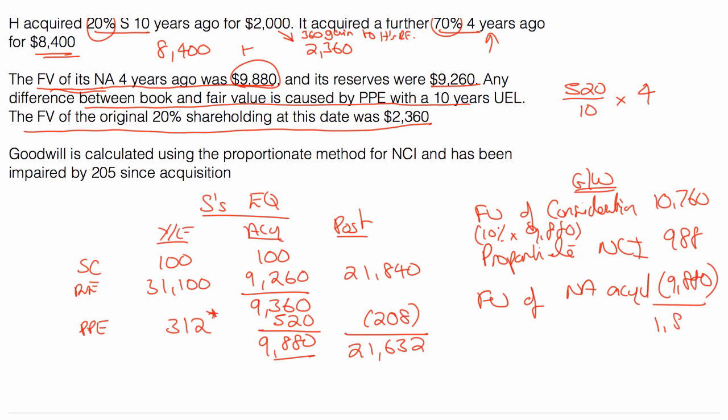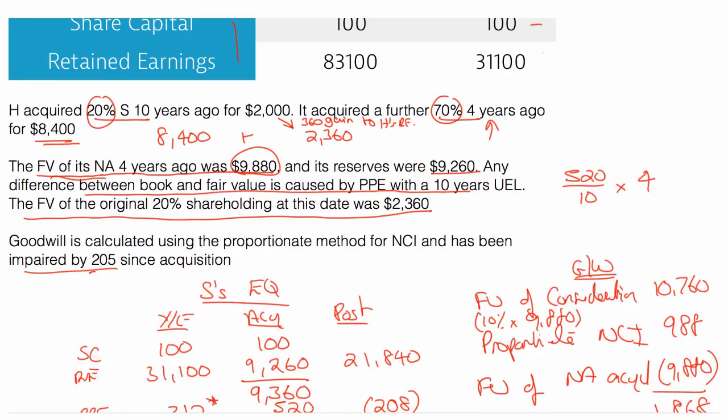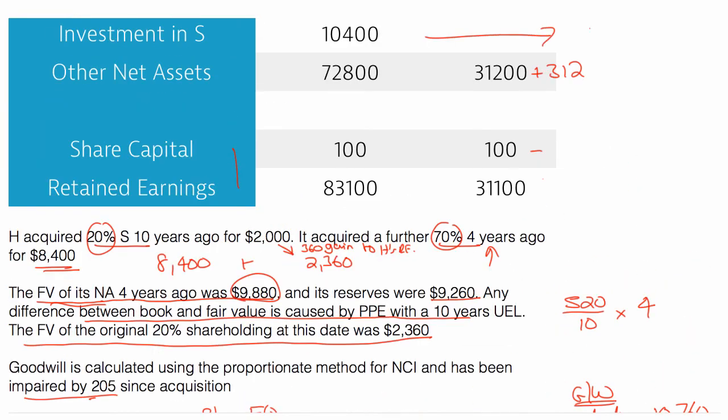So put all that into your goodwill calculation and you should get 1868. Then you take off impairment. So you look for the impairment and it says it's been impaired by 205. Take off the impairment and you've got your final goodwill of 1663. So we can go put that goodwill in. 1663 into our answer. We've started our answer off.